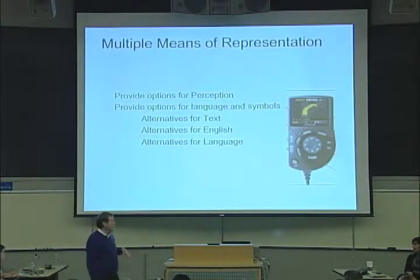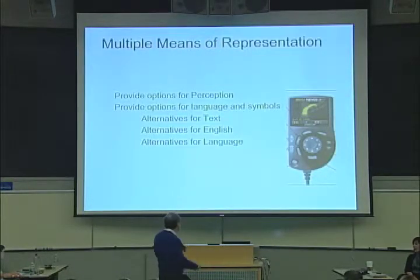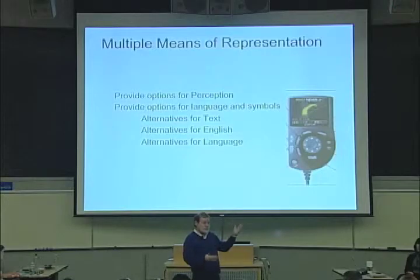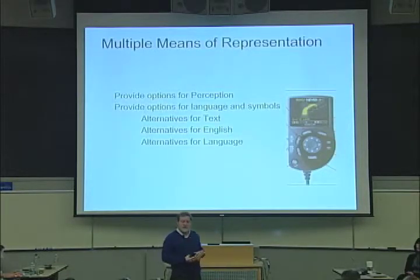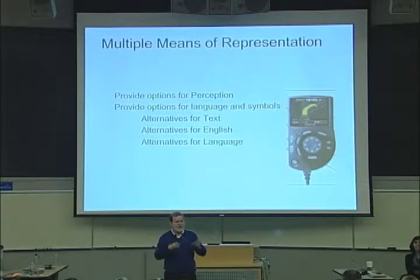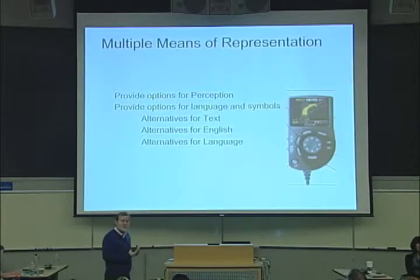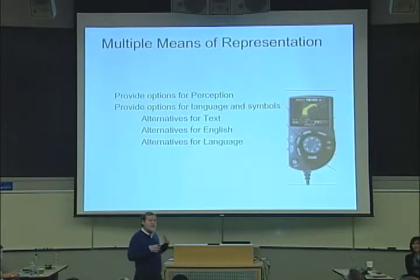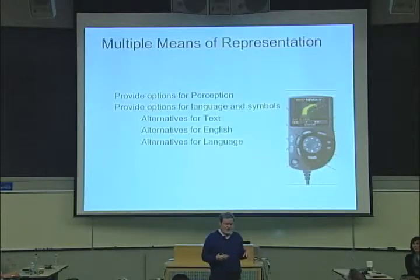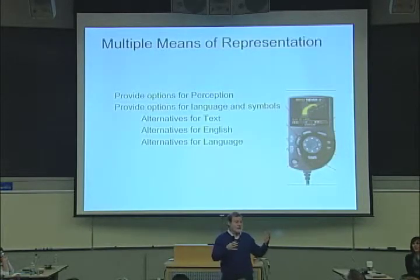We talk about options for language and symbols, and built into this GPS it's fabulous. Text is one way you can look at it, or it will speak to you. Built in are multiple languages — this one had eight languages. So it's easy to say, English isn't your language, what language do you want? You say German and it switches. It's even more subtle than that: you can ask for English English — the king's English — or American English or southern Texas English. You can choose what kind of voice you want.